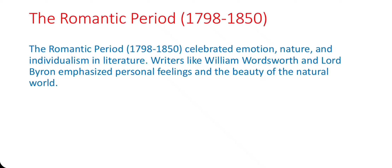Moving into the Romantic Age from 1798 to 1850, literature took a turn towards emotion, nature, and the sublime. This period is marked by the works of poets like William Wordsworth, S.T. Coleridge, and John Keats. The Romantic poets sought to express the beauty of nature and the depth of human emotion, reacting against the industrialization and rationalism of the previous era.